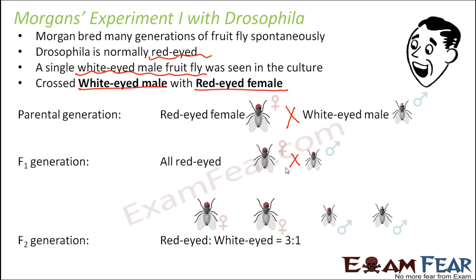In the F2 generation, out of four flies three were red-eyed and only one was white-eyed. Two were males and two were females. Three of them were red-eyed and only one was white-eyed, giving a phenotypic ratio of 3:1 red-eyed to white-eyed.